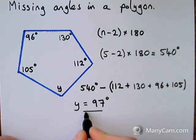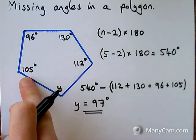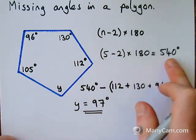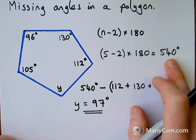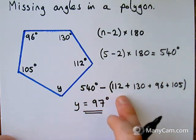Once you end up with your answer, you can always check that you are along the right lines, because if you added 97, 112, 130, 96, and 105, you should end up getting to 540. If you don't, then you've probably done something wrong in this part of your workings here.